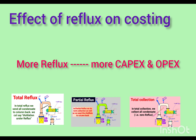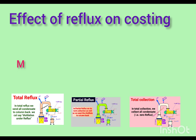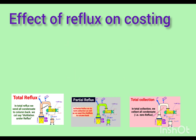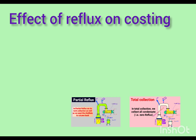Total reflux needs more operating cost because it consumes more energy. In the case of partial reflux, if we increase collection and reduce reflux, we can save energy and therefore save operating cost. Also, if we use more collection than reflux, we can save CAPEX because more collection means we automatically need a smaller column diameter, smaller heat exchangers, and less heating and cooling capacity. In short, more collection means lower initial investment (CAPEX) and lower operating cost (OPEX). Conversely, more reflux means higher CAPEX and higher OPEX.